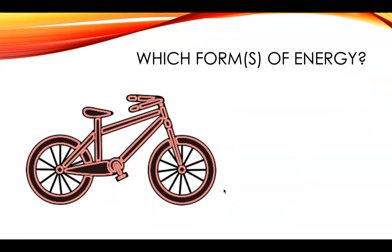So when you look at a bicycle, which form of energy do you think of? Well, on a bicycle, you've got the pedals that rotate and the wheels that rotate. This is energy of motion, so we would label that as an example of mechanical energy.